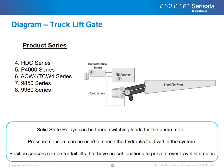This is an example of a truck lift gate and where our various solutions can be found within that system. Position sensors can be used to sense movement for tail lifts that have preset locations to prevent over-travel situations.